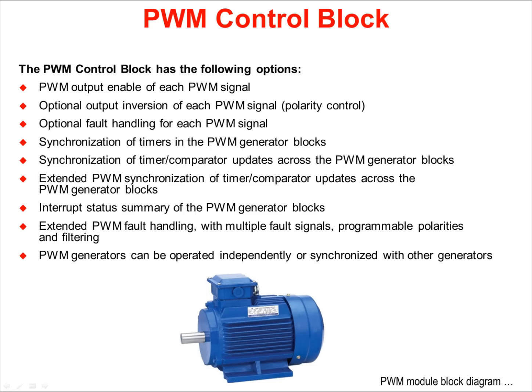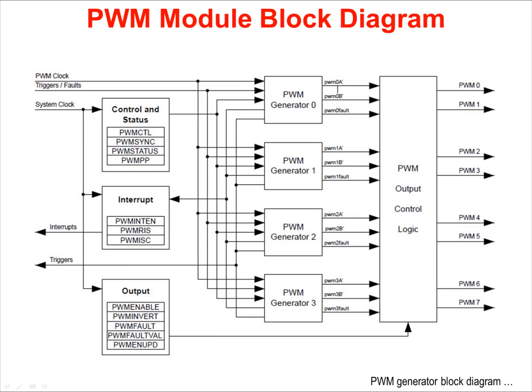The generators can be operated independently, or they can be synchronized together. Note the control and status, interrupt, and output control registers shown on the left. All four PWM generators go through the output control block before reaching the pins.